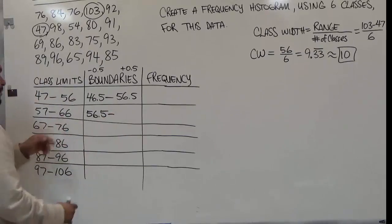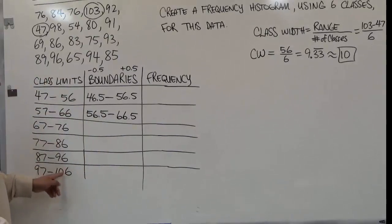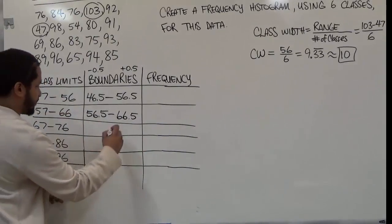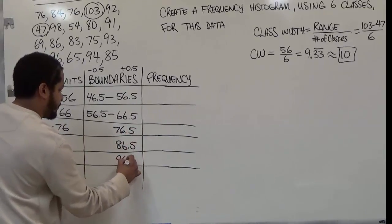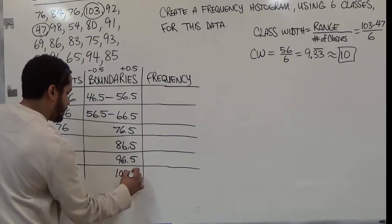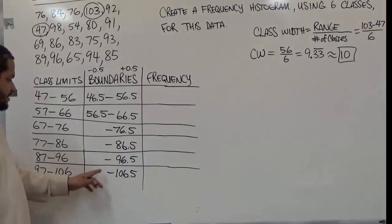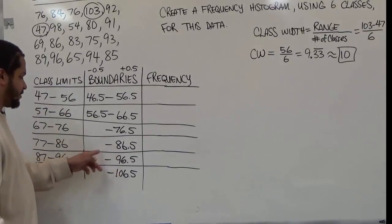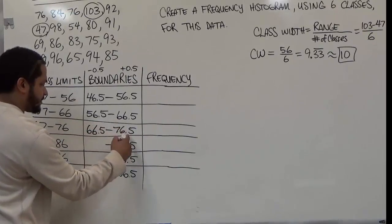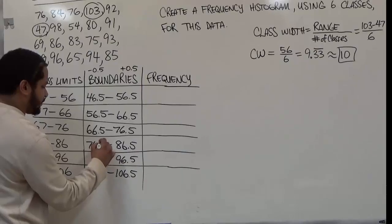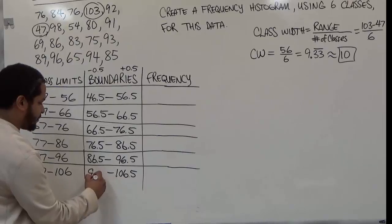Something unique when making boundaries: the final boundary of the previous class is where the next boundary begins. Because we subtract 0.5 from fifty-seven we get the same value of fifty-six point five. A quick way to do this: take the previous class's final boundary and insert it as the start of the next line. So sixty-six point five, seventy-six point five, eighty-six point five, and ninety-six point five follow in sequence.